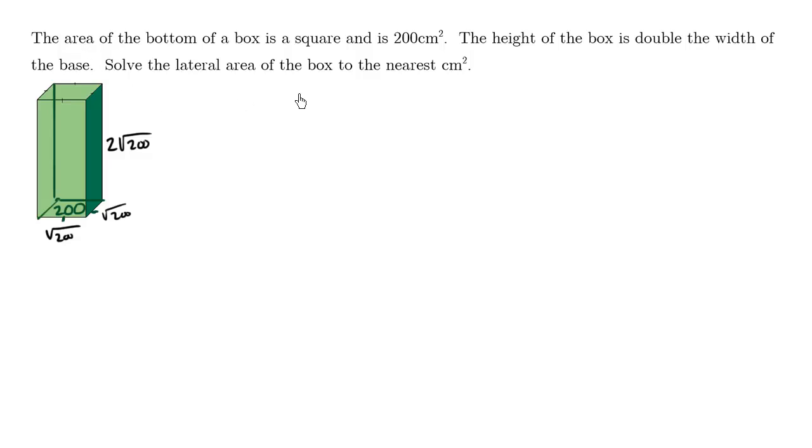Solve the lateral area of the box to the nearest centimeters squared. Now the word lateral means side only. So we're not interested in the top and bottom areas. We're interested in the four sides: front, back, left and right.